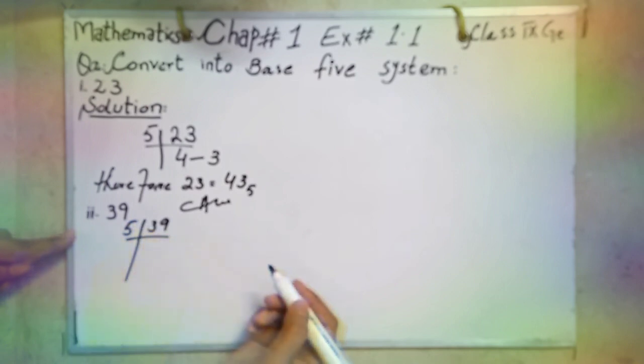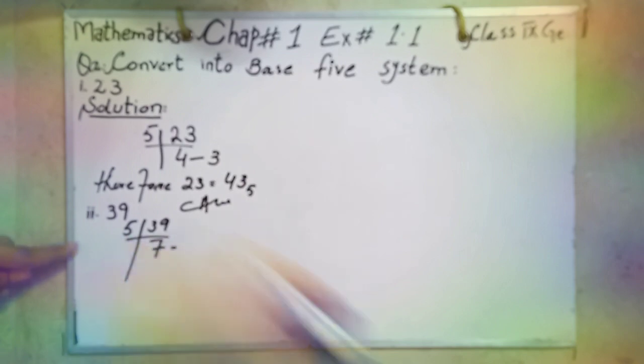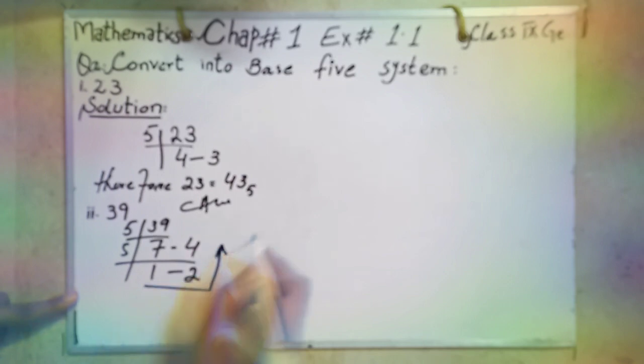5 times 7 is 35, 5 times 8 is 40. 40 is a bigger number, so 5 times 7 is 35. 39 minus 35, 4 is left. Again, 5 times 1 is 5, 7 minus 5, 2 is left. So 1, 2, 4 answer.